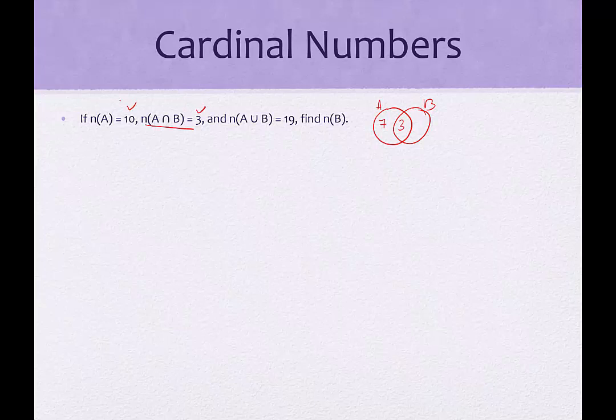Okay, so now the next thing we know is that the union, the cardinal number of the union is 19. So I know that the three regions, 7 plus 3 plus the only B, adds up to 19. That's 10 plus B is equal to 19, which means only B is 9. Now the question is, what's the cardinality of set B? You might be tempted to say 9 because we just figured that out, but it's not 9, right? Because it's the entire set and the entire set has a 3 and a 9, which would be 12. So the cardinal number of set B is 12.